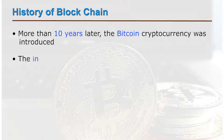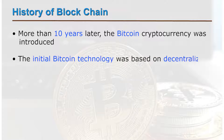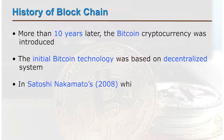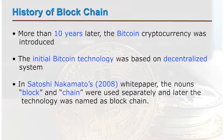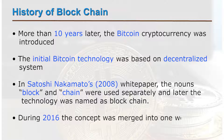The initial Bitcoin technology was based on a decentralized system. In Satoshi Nakamoto's white paper in 2008, the words 'block' and 'chain' were used separately, and later the technology was coined and named as blockchain. During 2016, the concept was merged into one word: blockchain.